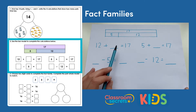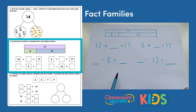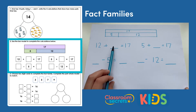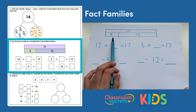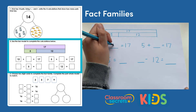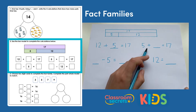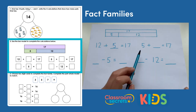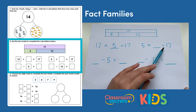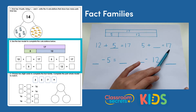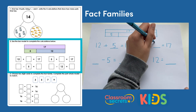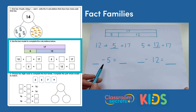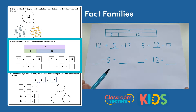So we've got 12 add something equals 17. The part is missing here — we've got our part 12, which means our other part will be 5. Here's our add. At the other side we've got 5 add something equals 17: 5 add 12 equals 17.